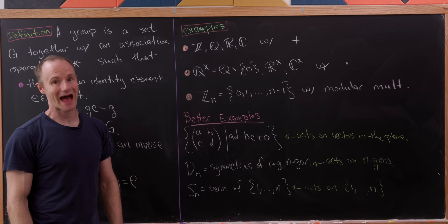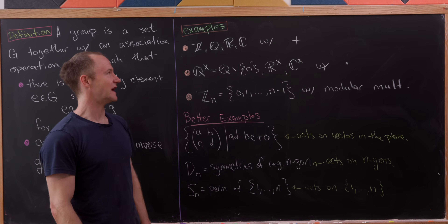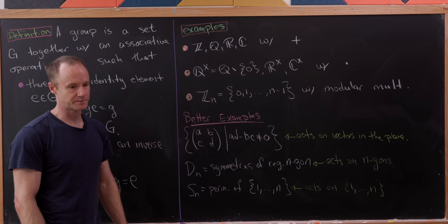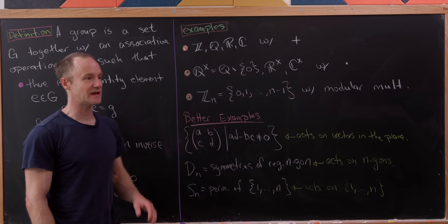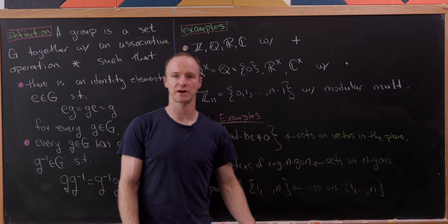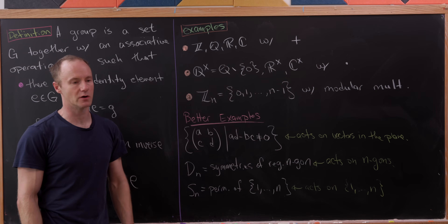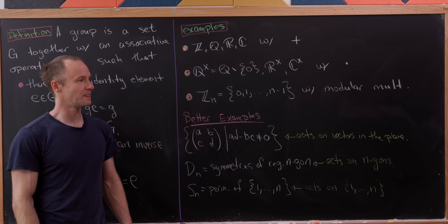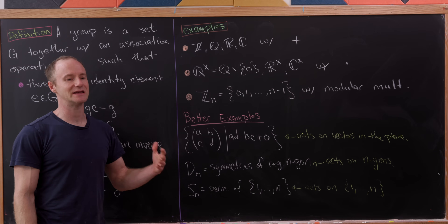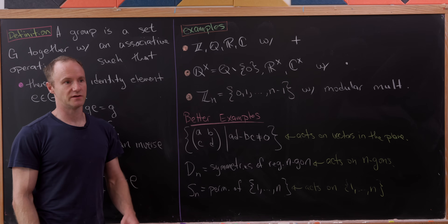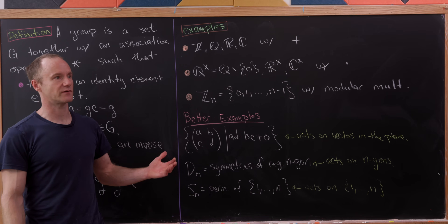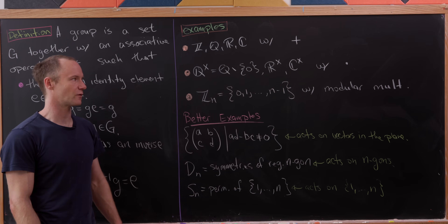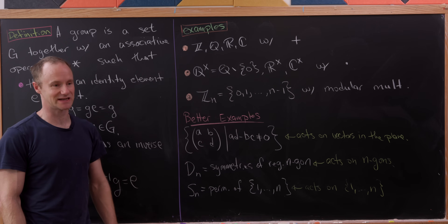The arithmetic additive groups include the integers, the rational numbers, the real numbers, and the complex numbers. Here the identity is simply zero — adding zero to anything leaves it unchanged. Inverses are simply negations: the inverse of four is negative four, because four plus negative four is zero, getting you back to the identity.